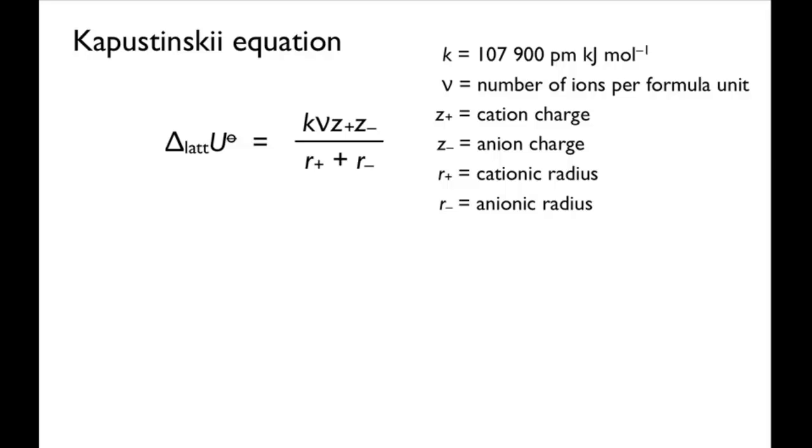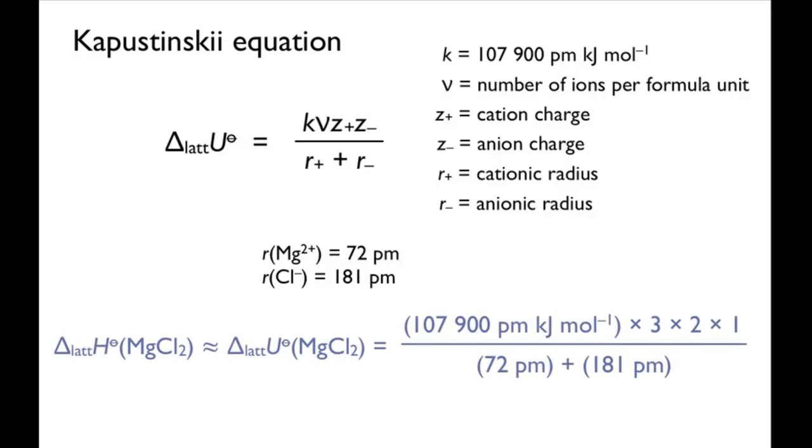In this case, there are three ions in the formula unit, so nu is three. The charge on the cation is two, and the charge on the anion is one. The ionic radius for Mg-2-plus is 72 picometers. Putting these values into the formula gives a value of 2560 kJ per mole.